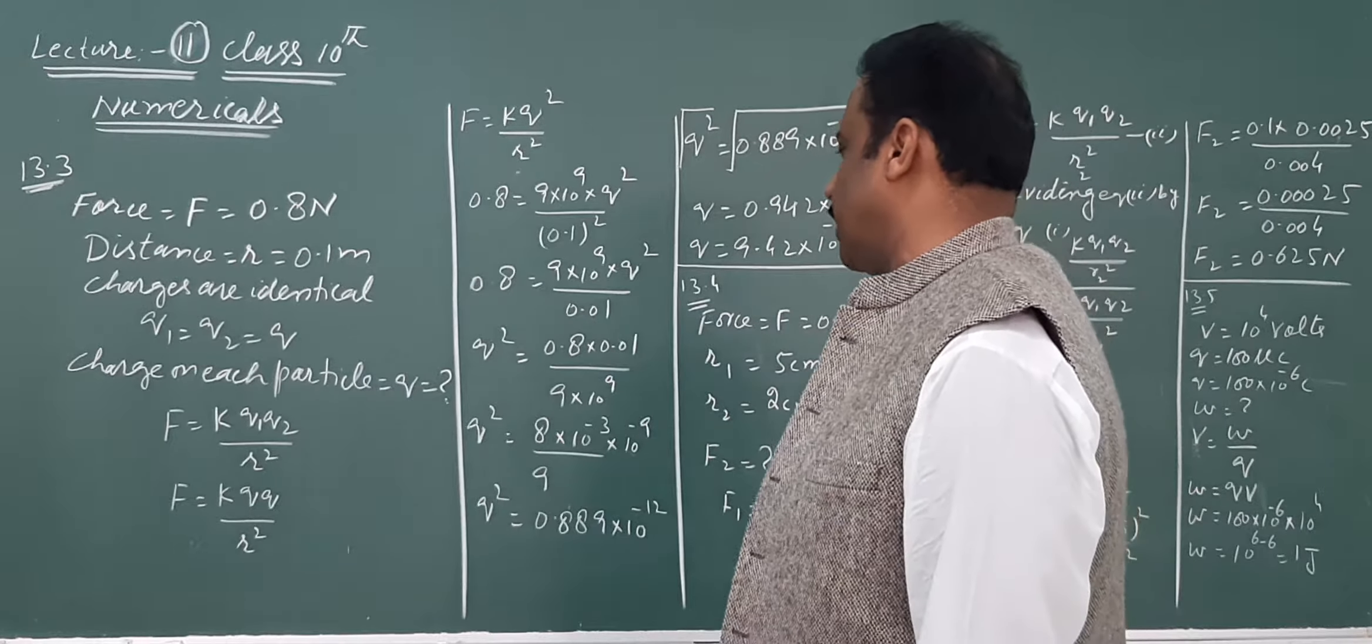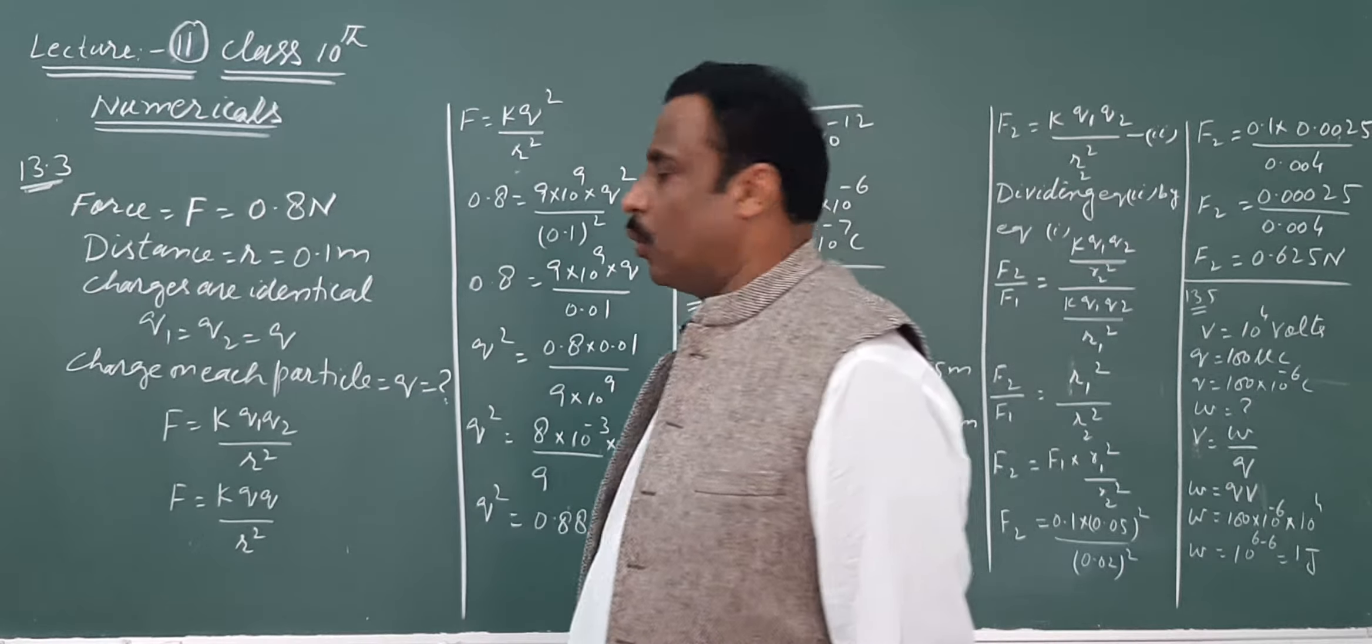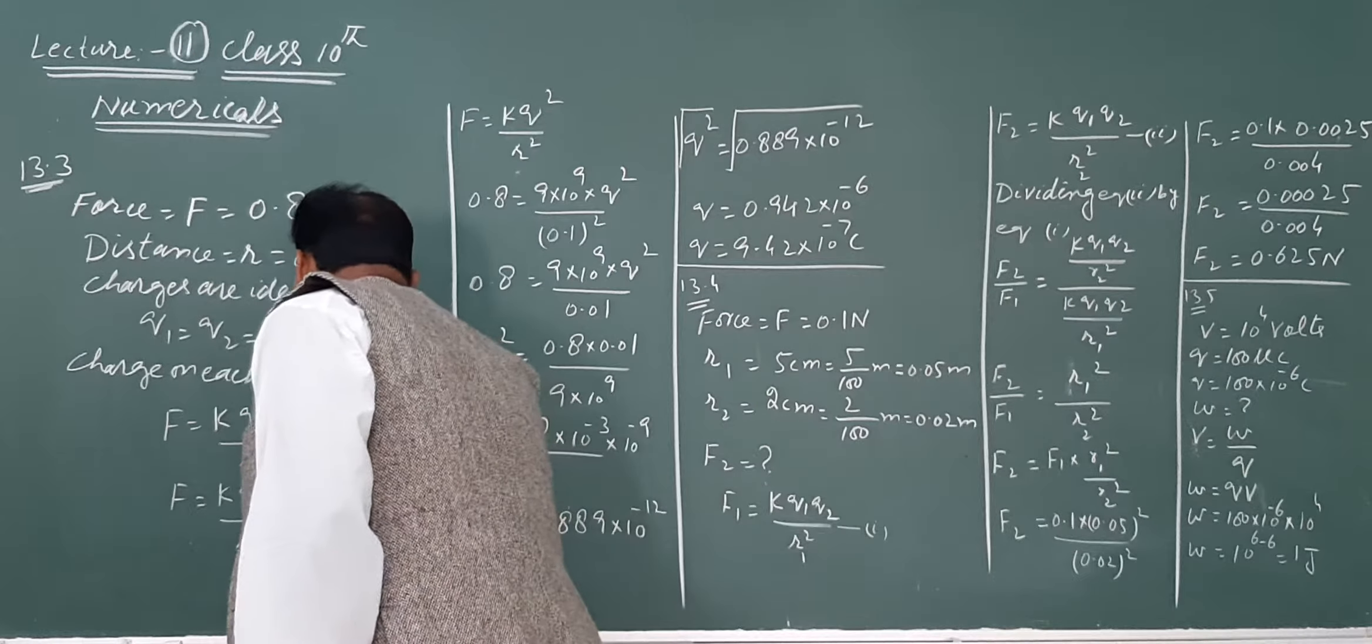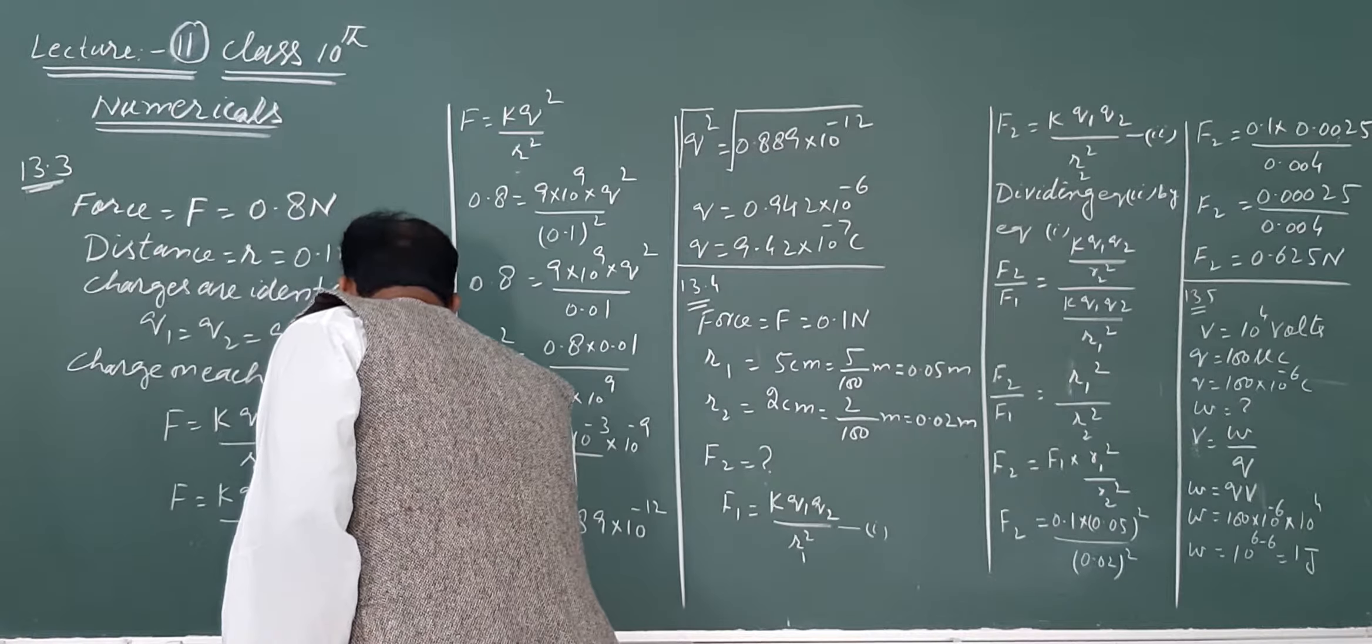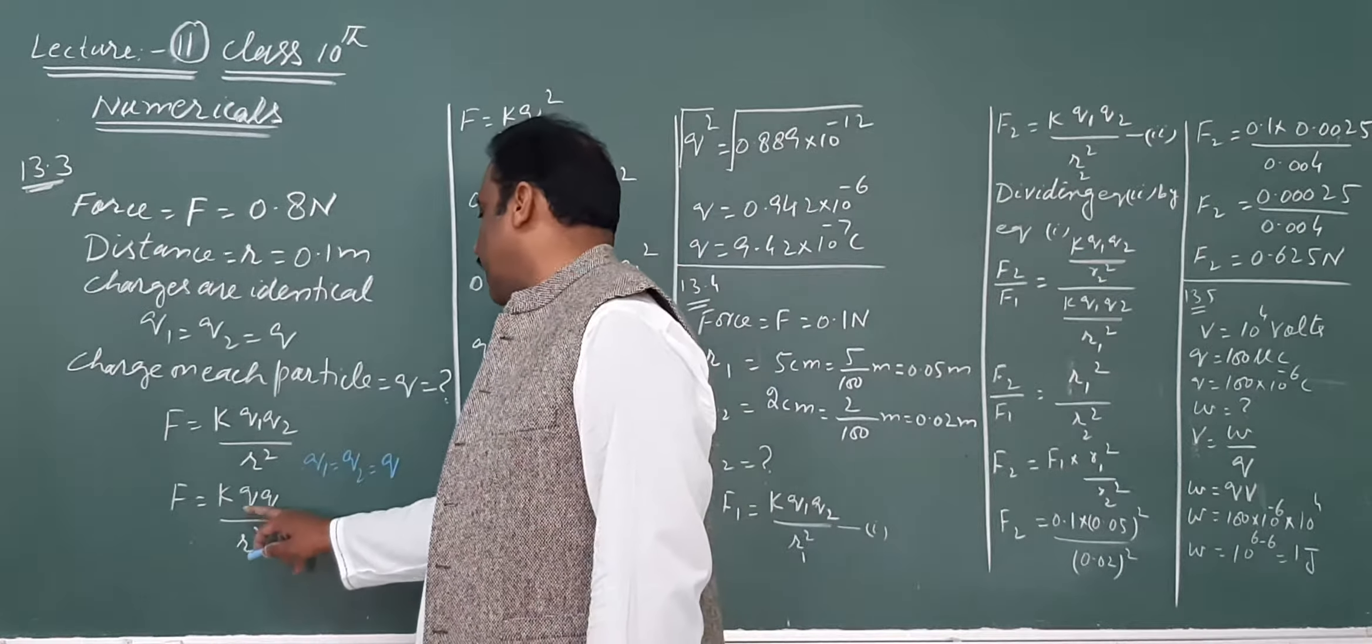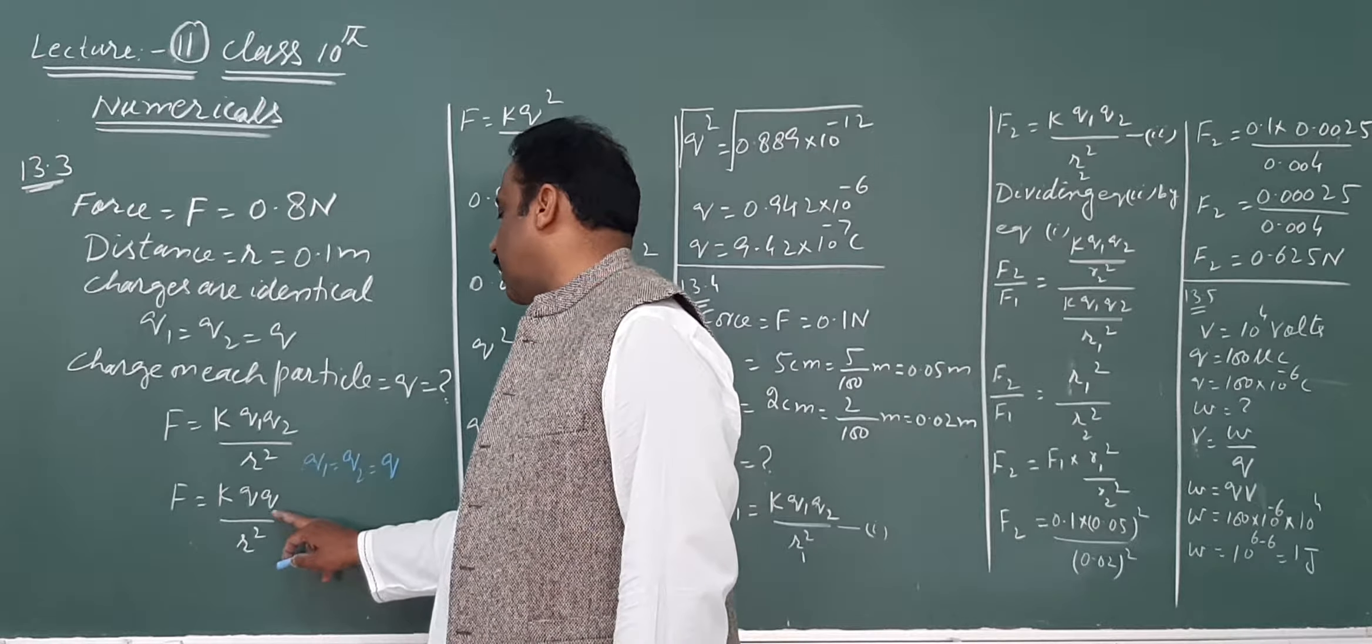This statement ko dekhkar hum data likhte hain. Force ko hum F se denote karenge, which is 0.3 newton. Distance is 0.1 meter. In the statement it's given that the charges are identical, so if one charge is Q1 and the other is Q2, since they're identical we can call both charges Q.